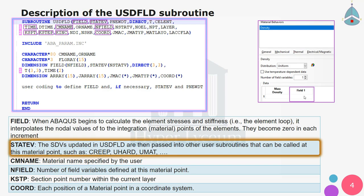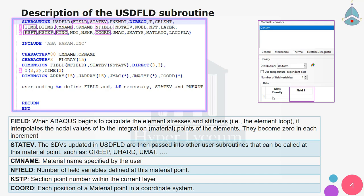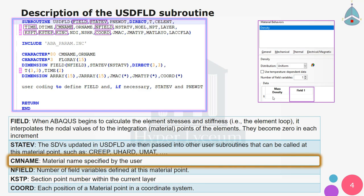The solution-dependent state variables updated in the USDFLD subroutine are then passed into other user subroutines called at that material point, such as CREEP, UHARD, UMAT, and so on. NSTATEV is the number of state variables defined in a model. If a state variable's value is not updated in an increment, it is initialized from the previous increment by default.